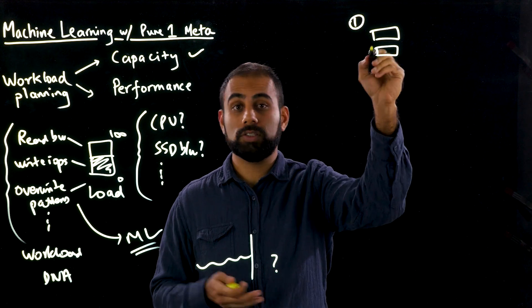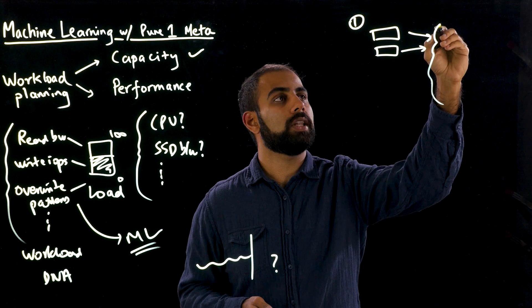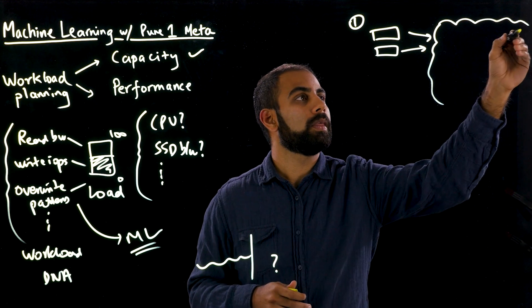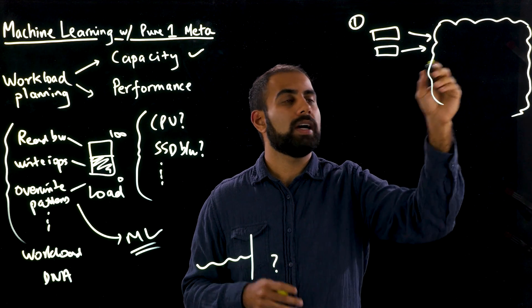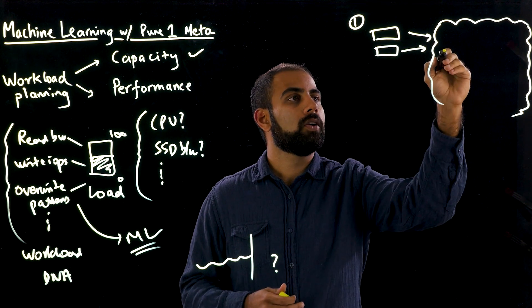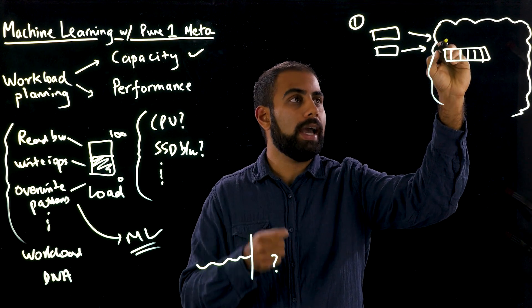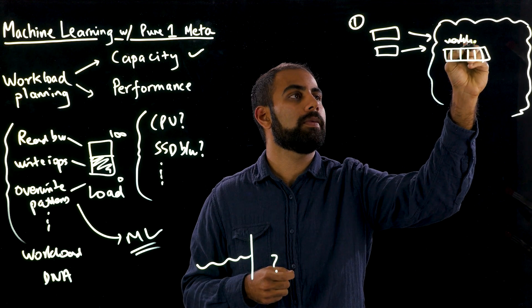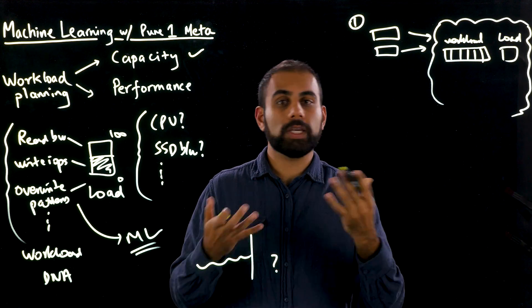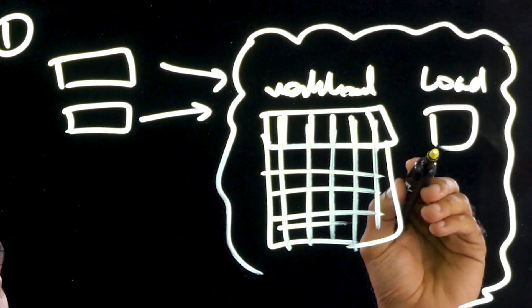Well, it all starts with the data. Pier 1 collects telemetry data from all of our arrays in the field, real time, which means that we have a data set in Pier 1 with trillions of data points, where each of these points consists of what the workload looked like at that point of time, and also what the load ended up looking like on the array.